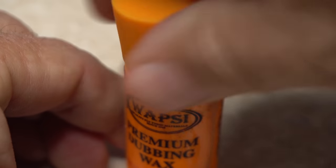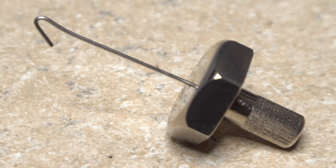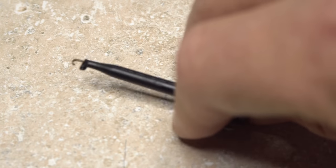Ready some sticky dubbing wax and keep it within easy reach as well. Same goes for a dubbing whirl and plunger-style hackle pliers.